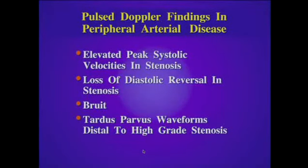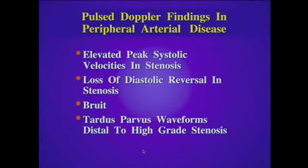Important pulse Doppler findings to look for in our evaluation for peripheral arterial disease include elevated peak systolic velocities in the stenosis, loss of diastolic reversal, bruit artifact on pulse Doppler, and tardus parvus waveforms distal to the high-grade stenosis.